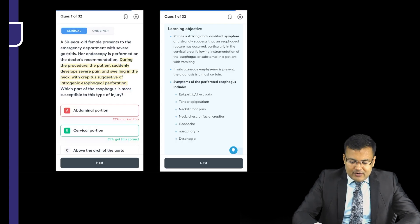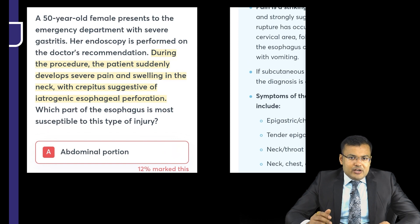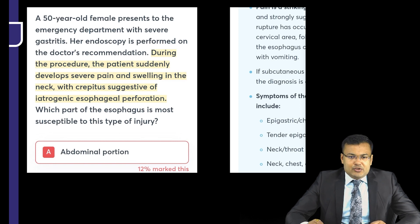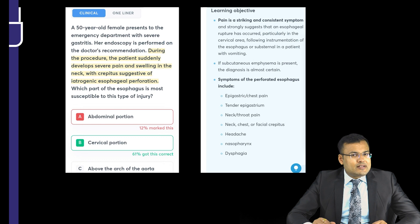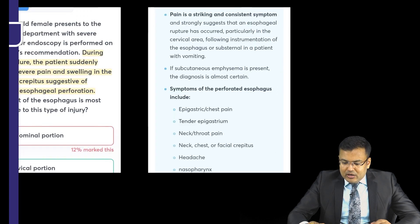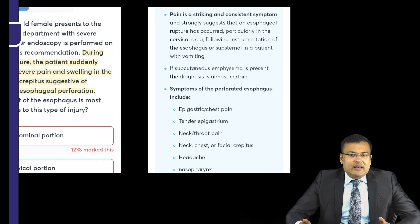Here is a sample question: A 50-year-old female presents to the emergency department with severe gastritis. Endoscopy is performed on the doctor's recommendation. During the procedure, the patient suddenly develops severe pain and swelling in the neck — crepitus suggestive of esophageal perforation. Which part of the esophagus is most susceptible to this type of injury? The answer is the cervical portion. In the learning objective, every important point is given — pain is a striking and consistent symptom, subcutaneous emphysema is present making the diagnosis almost certain — along with epigastric pain, tender epigastrium, and throat pain.